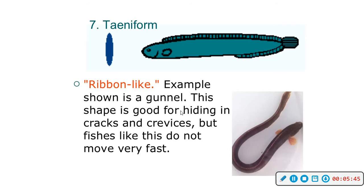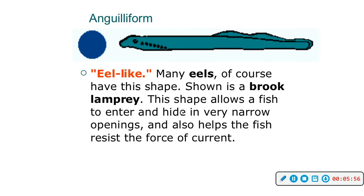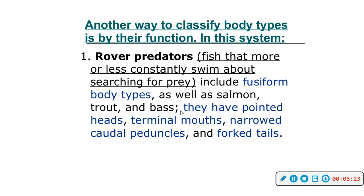Globiform fish are like your puffer fish. Anguilliform are your eel-like fish. Filiform would be more like your pipefish — they're not quite as wriggly as a snake.